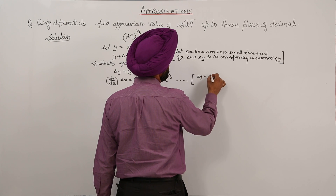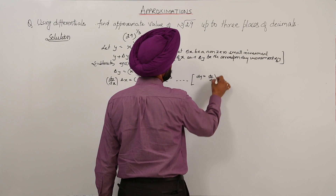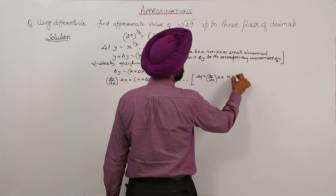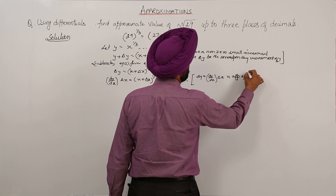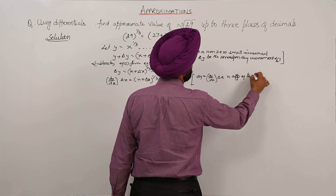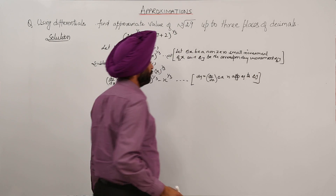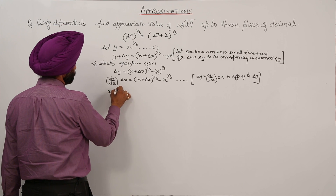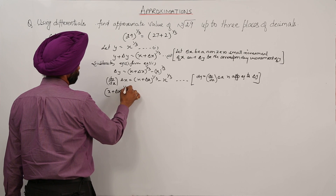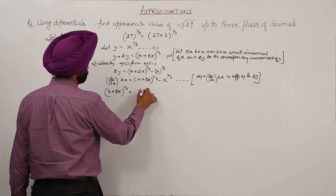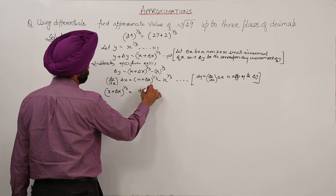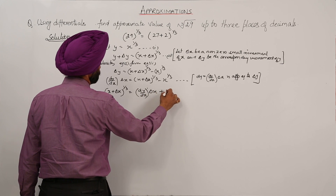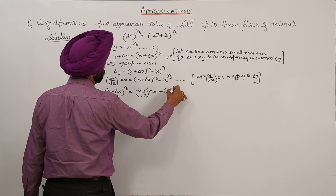Now what we have to write for delta y: dy is approximately equal to (dy/dx) times delta x, which is approximately equal to delta y. So (x plus delta x) raised to power 1/3 is equal to (dy/dx) times delta x plus x raised to power 1/3.